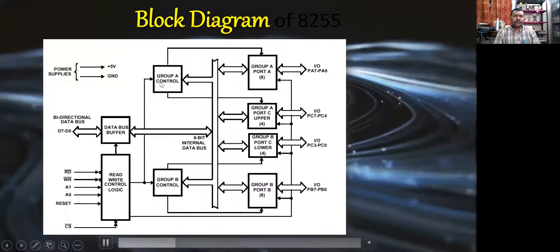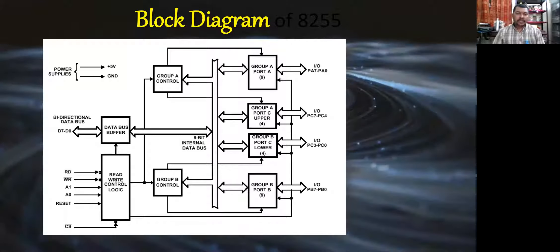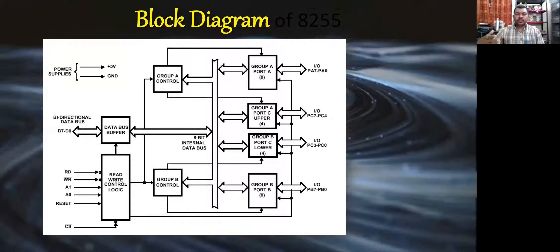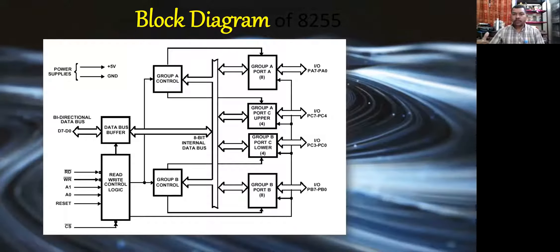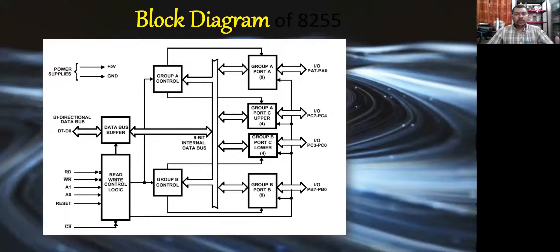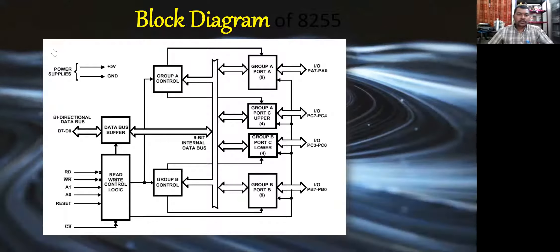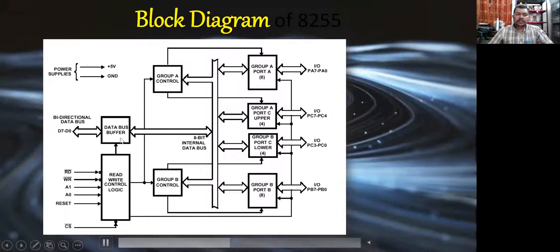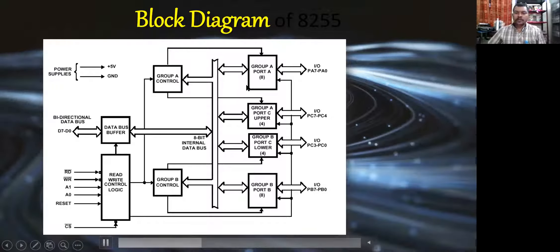This was the basic block diagram of 8255. It consists of three ports: port A, port B, and port C. Port C can be used in two ways — port C upper, which belongs to group A, and port C lower, which belongs to group B. These ports can be programmed according to the requirement of the programmer for inputting and outputting data. We also have group A control, group B control, read/write control logic, and a data bus buffer for communicating with 8085.